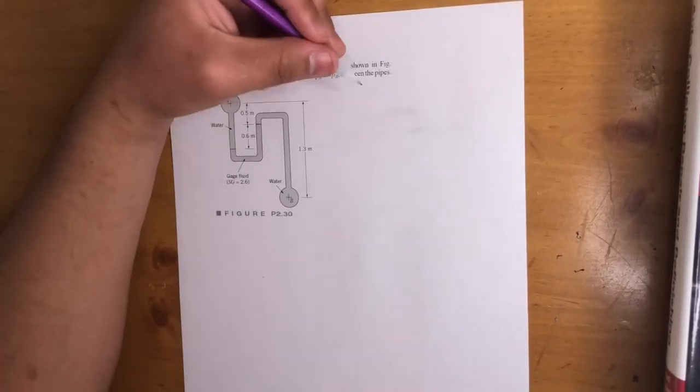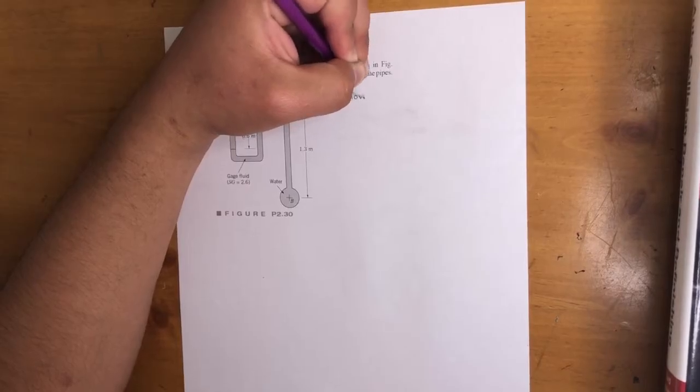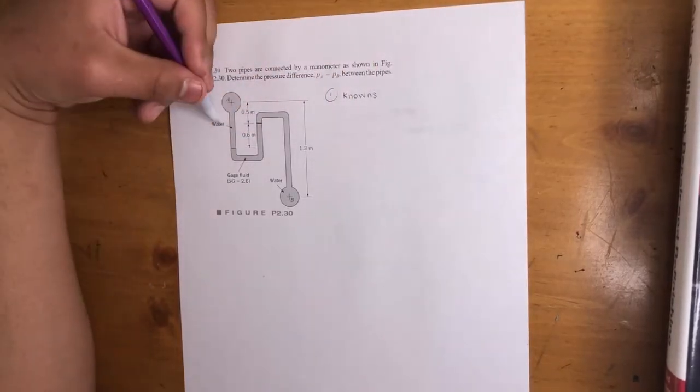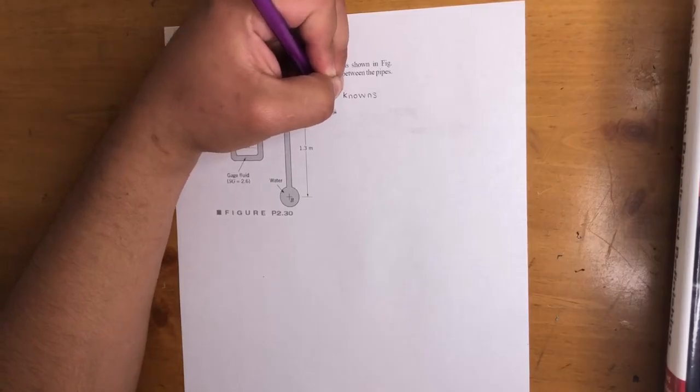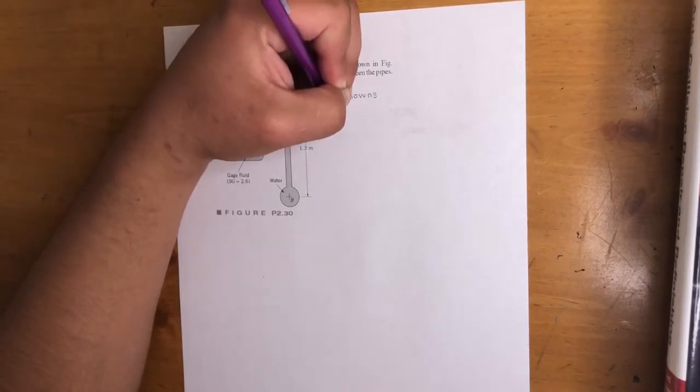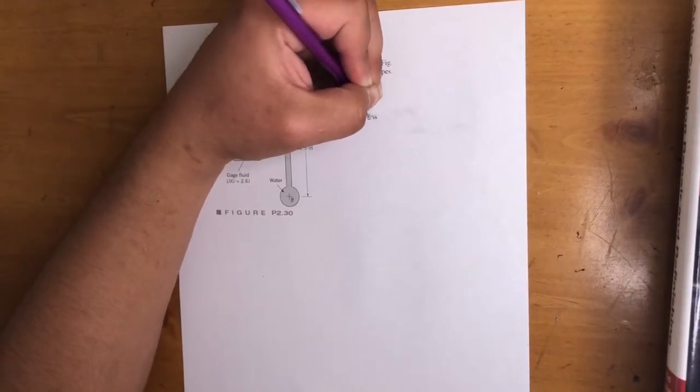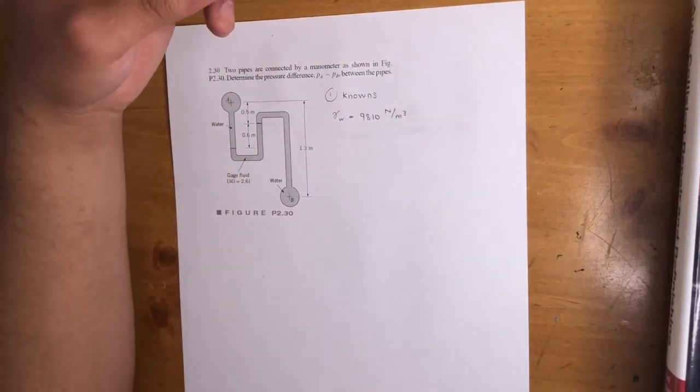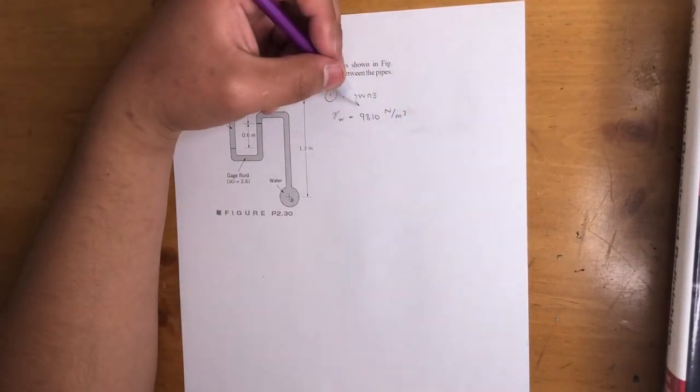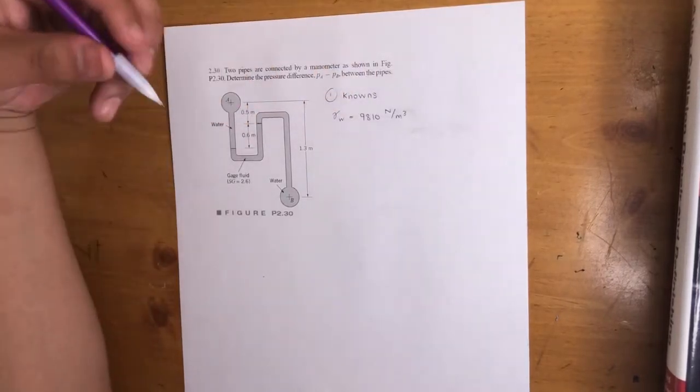So first we start off with our knowns. We're dealing with water, so we need the specific weight of water. It is 9810 Newtons per meter cubed. By this point you should know that, it's density times gravity. Gravity is 9.81, density of water is 1000.